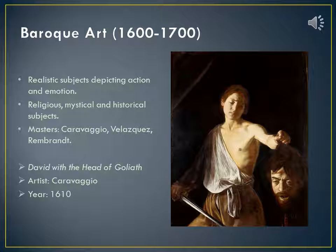Baroque art is identified by realistic subjects that depict spectacular action and generate powerful emotions. Religious, mystical, and historical subjects, which were often propaganda for the church or state, were brought to life with characters in contemporary clothing by naturalistic painting of outstanding virtuosity, dramatic lighting, and bold asymmetric and diagonal compositions. One example of Baroque art is the painting David with the Head of Goliath, painted by Caravaggio in 1610.